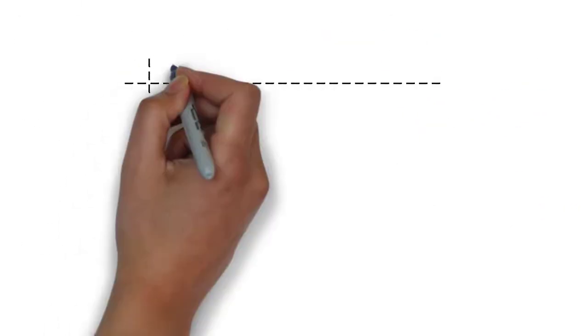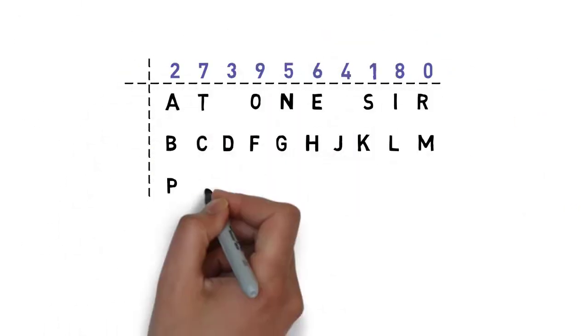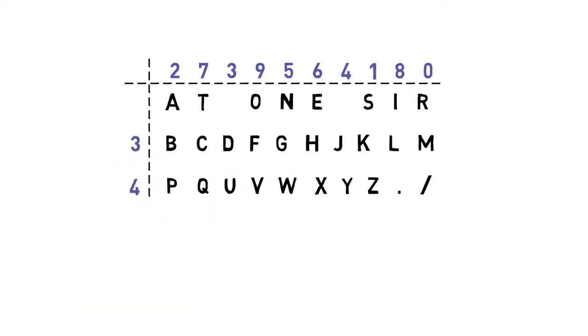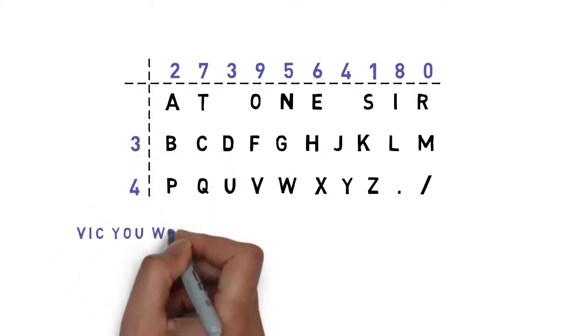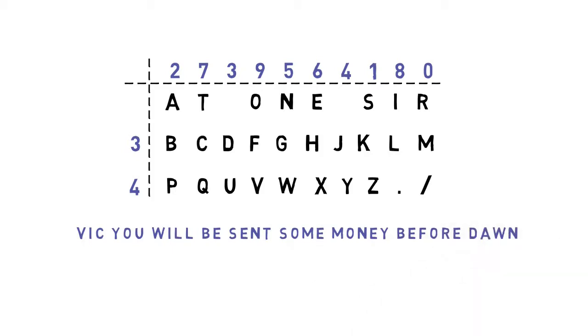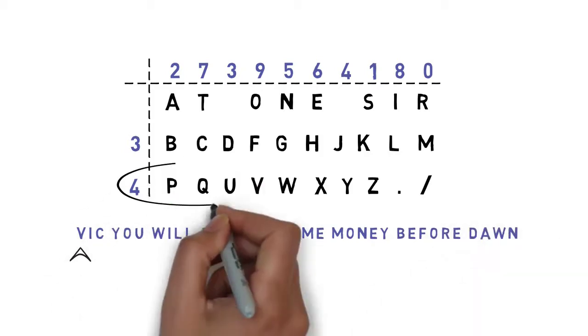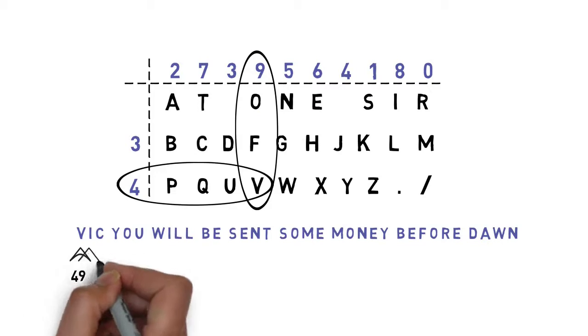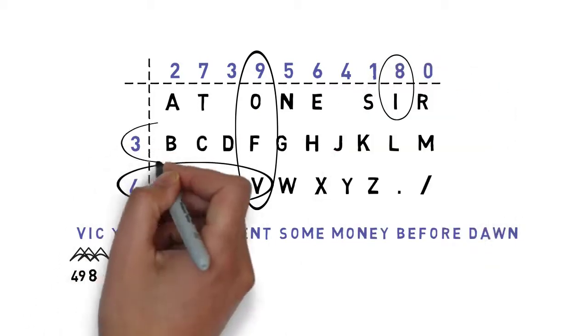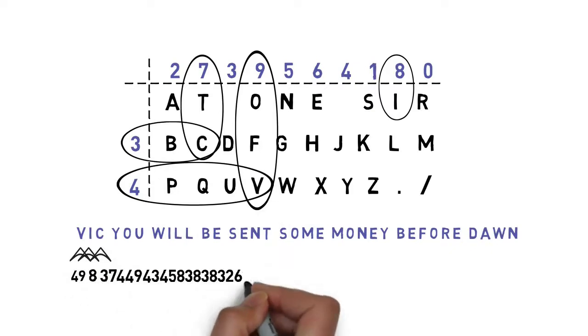With the straddling checkerboard in place, we can begin enciphering a message. Assume that the message is: Vic, you will be sent some money before dawn. In this case, V corresponds to 49, I corresponds to only 8 since it's in the second row, C to 37, and so on.